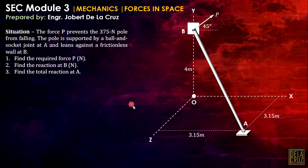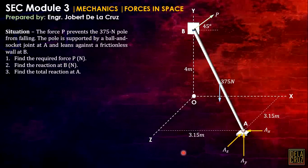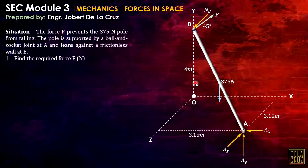To find the required force P, the best option is to look at a plane view. We have the 375N weight on the free body diagram, assuming the reactions are in that direction. The reaction at B should be normal to the wall. This normal reaction at B is aligned or parallel to the Z axis.